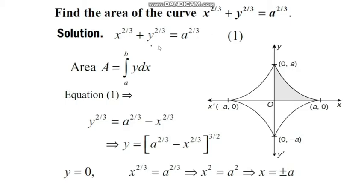Setting y = 0 in equation one gives x^(2/3) + 0 = a^(2/3). Cubing both sides of the equation gives x² = a², which is a quadratic equation. It has two roots: x = ±a.